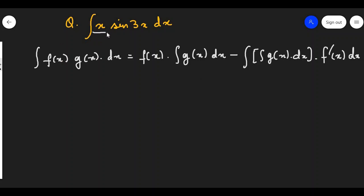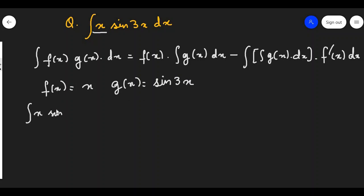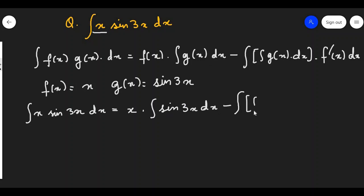Whenever you have a function of the form x raised to n, we make that our first function. Here also, we will make f(x) as x and g(x) as sin3x. We can put everything back in the formula and get our solution. So, integration of x·sin3x dx can be written as the first function, x, into integration of the second function sin3x dx, minus integration of [integration of sin3x dx], with differentiation of x being 1, times dx.